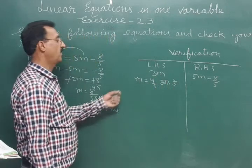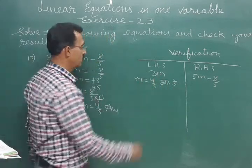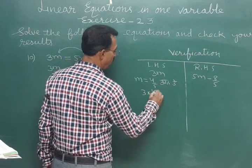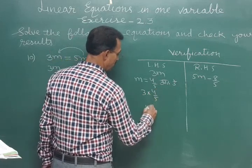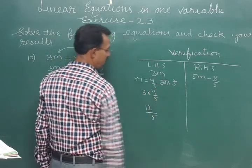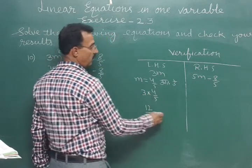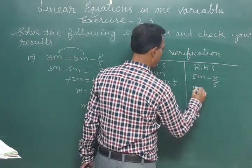Okay, so putting the value of m in the left hand side, 3 into 4 upon 5. This is equal to 12 upon 5. 3 into 4 is 12 upon 5.